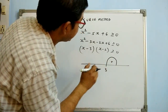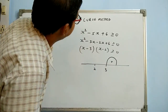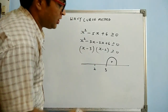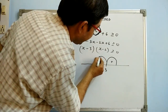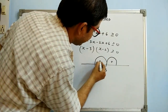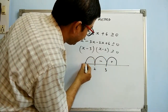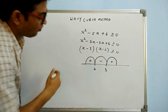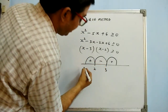I recommend always making the coefficient of x² positive and starting in this fashion. The second interval is negative, the third interval is positive, and so on if other intervals are needed.